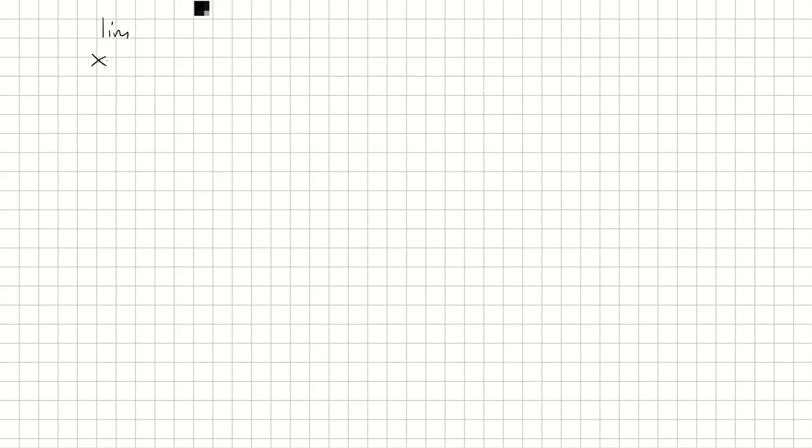We want to find a limit as x approaches 0 of tangent 2x over 6x times secant 3x. So let's first rewrite this in terms of sine and cosine.